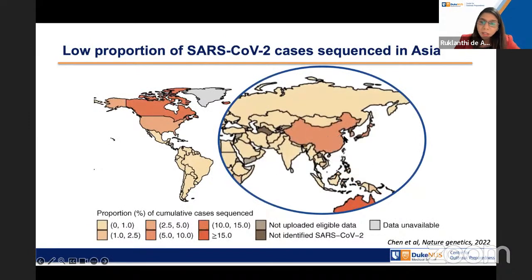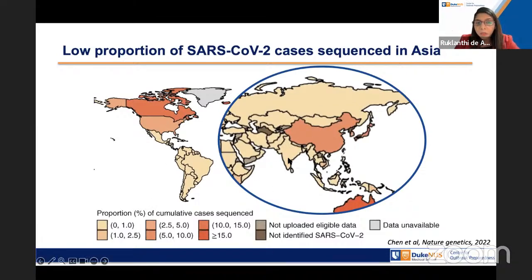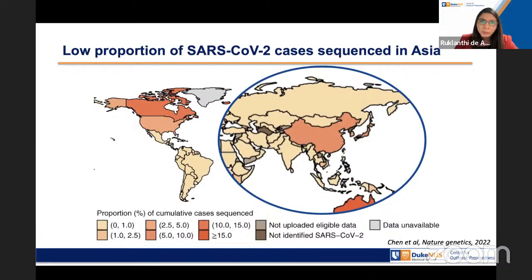Interestingly, a 2022 publication showed that although sequences are clearly coming out of Asia, if you look at the proportion of sequences as a percentage of COVID cases, many countries in the region were sequencing very few of their SARS-CoV-2 cases. So there is a need for strengthening capacity for genomic sequencing. Asia PGI was set up for that very reason — strengthening the capacity of pathogen genomic sequencing for infectious disease surveillance, specifically in lower-resource countries in Asia. It was started with a pilot grant from the Bill and Melinda Gates Foundation.